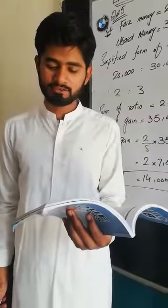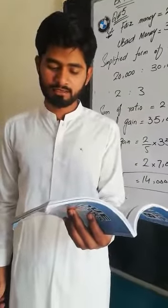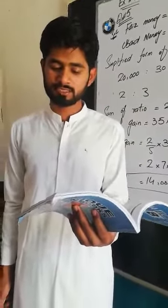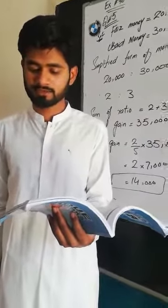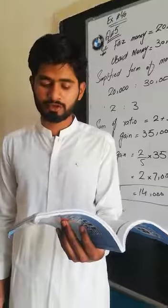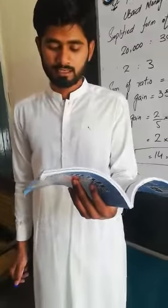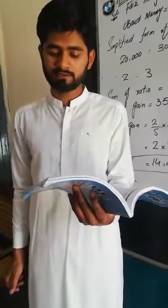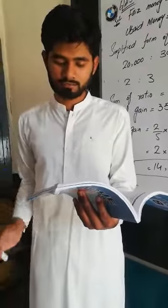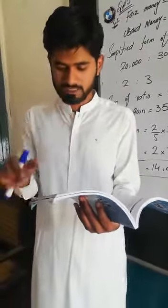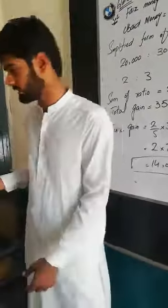Question number 5 is: Faiz and Ubaid invest 20,000 and 30,000 rupees respectively in a small business. They gain 35,000 rupees at the end of the month. How much will each one gain?